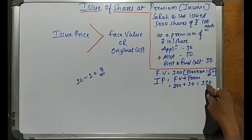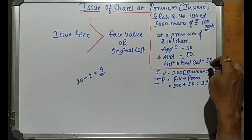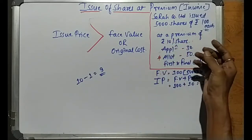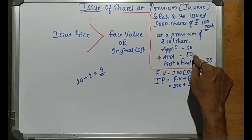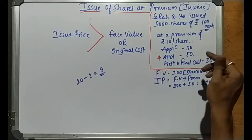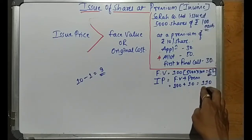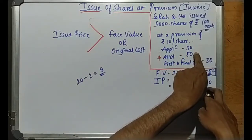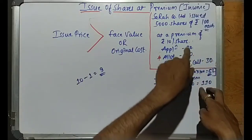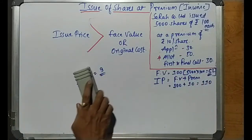We have to collect these 110 rupees. Now we'll get started with the journal entries. The collection stages are: application 30, allotment 50, first and final call 30. To cross-check: 30 plus 50 is 80, and 80 plus 30 is 110. So the total collection amount is correct.